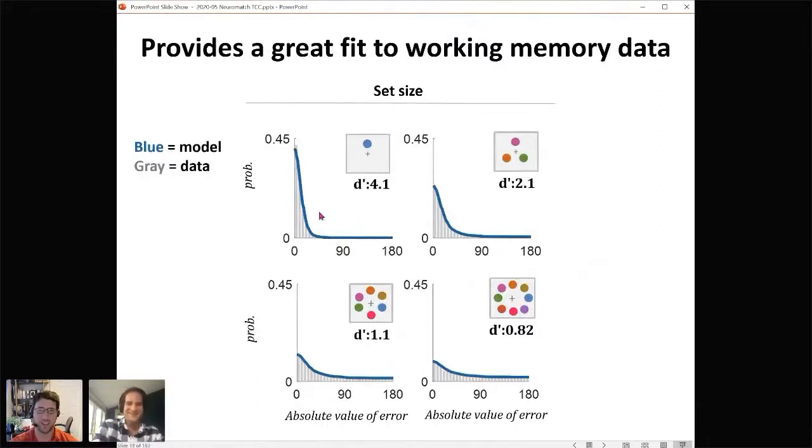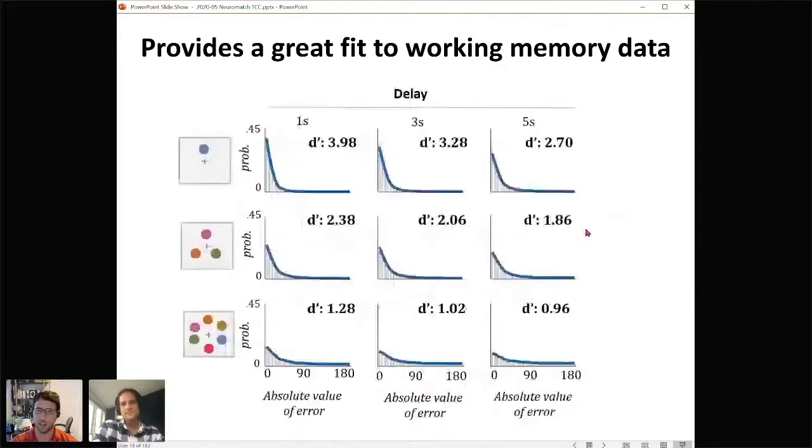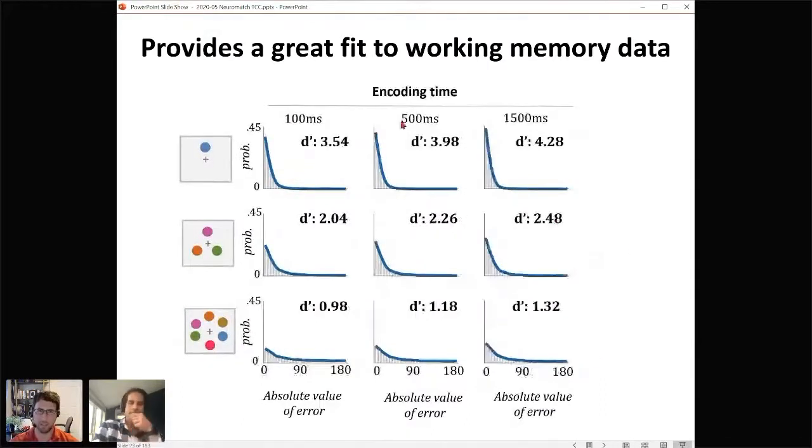Blue here is the model fit and gray is the data from a bunch of people. Set size one, three, six, eight, you can see that it just looks like decreasing signal to noise, just d prime dropping. If you change the delay, then d prime drops at all the set sizes. If you increase the encoding time instead, d prime increases. These all seem to change the signal-to-noise ratio, but none of them result in any qualitative changes in the shape of those distributions. That's awfully coincidental if there's really three ways these distributions can change shape. Why would they only need one parameter to change the shape?